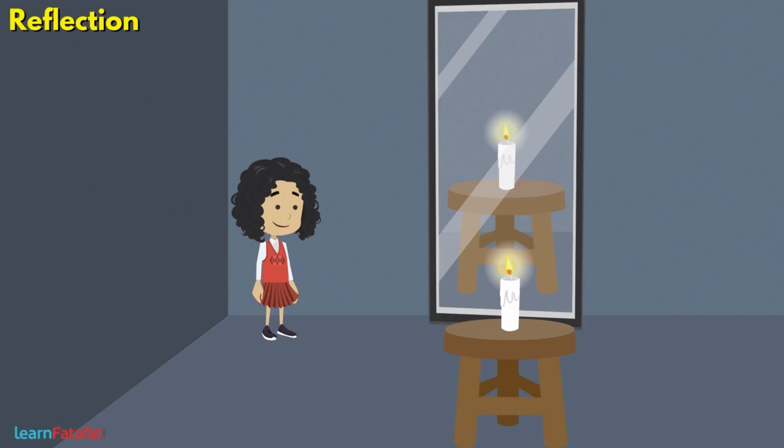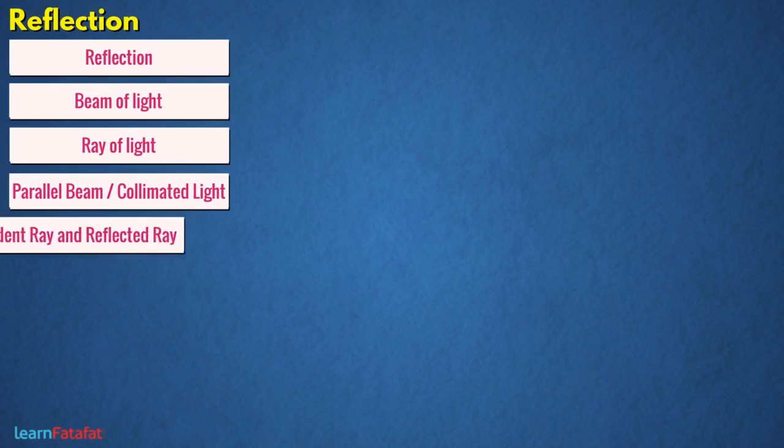Light when falling on the object. Now suppose we keep a burning candle in front of a mirror. Here also light from the object falls on the mirror surface and comes back to us, that means reflection takes place. Let us now discuss some of the key terms used in reflection.